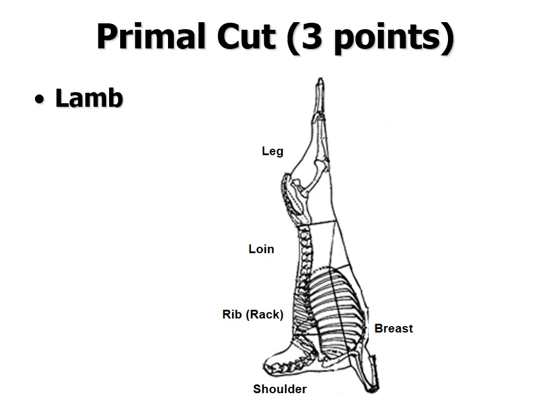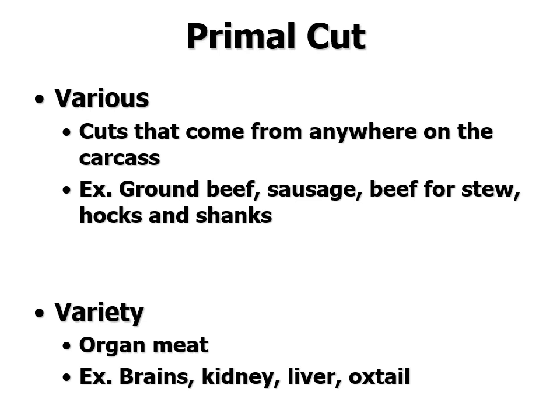In lamb, the back leg is called the leg. When the butcher cuts it, it's a lot further forward than in the ham or the round, so some cuts that would be in the loin of pigs and beef are actually found in the leg of lamb. Then there's the loin, the rib or rack, the shoulder, and in lamb it's called the breast rather than the brisket.